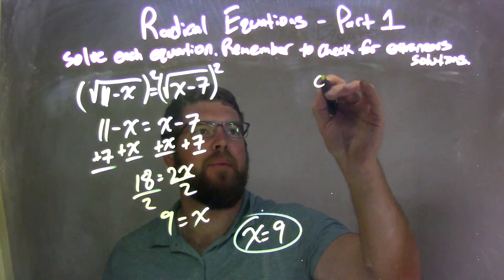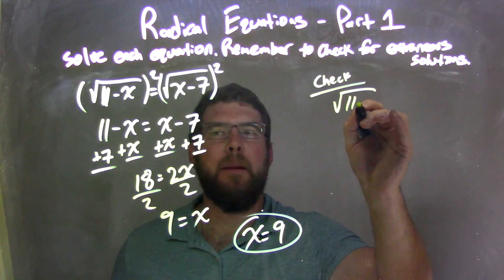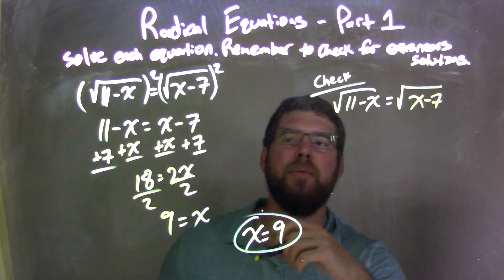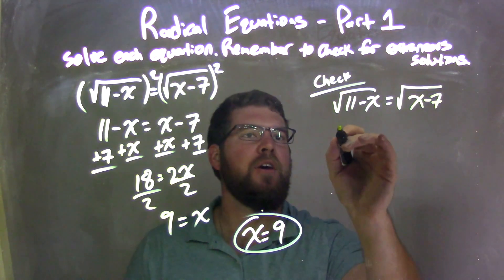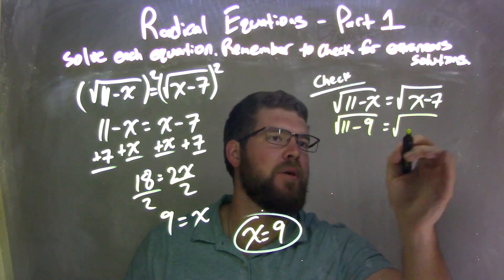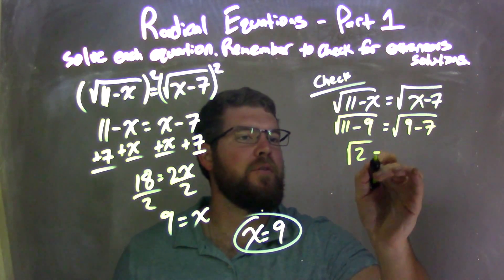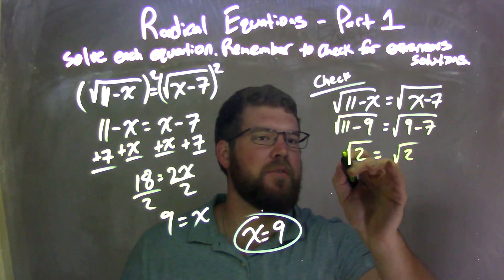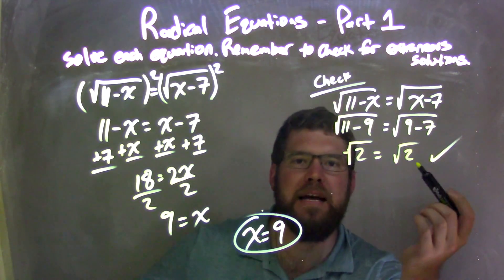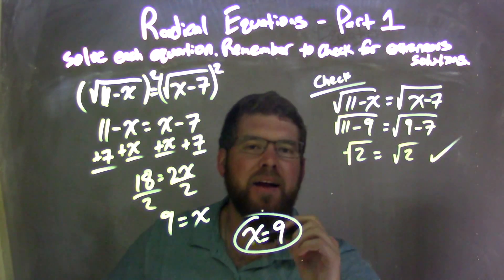But now I need to check. I'm going to check that bad boy. Rewrite my equation: square root of 11 minus x equals the square root of x minus 7. I'm going to plug in 9 for my x's. So, 11 minus 9 equals square root of 9 minus 7. Simplify. 11 minus 9 is 2, so square root of 2 here equals 9 minus 7 is also 2. Square root of 2 equals square root of 2. Check. They are the same. Fantastic. So I can confirm that we have no extraneous solutions and that x equals 9 is my answer.